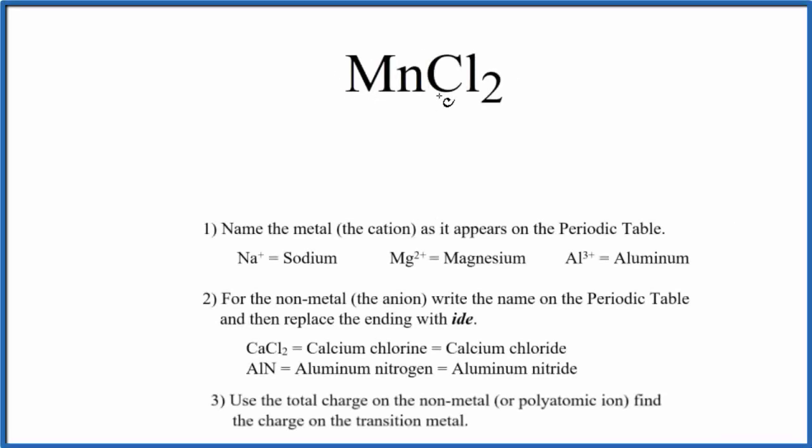To write the name for MnCl2, we first recognize that we have a metal and a non-metal. So when we have a metal and a non-metal, we're going to name this as an ionic compound.